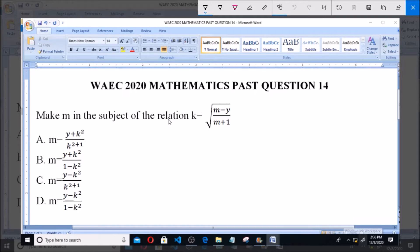As we make m the subject of this relation, the first thing we need to do is eliminate the square root. By eliminating the square root, we simply square both sides. So squaring both sides, we have k squared equals the square. Now we eliminate the square root, giving us (m minus y) over (m plus 1).